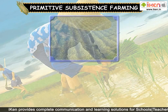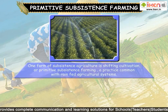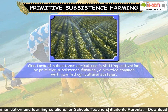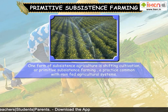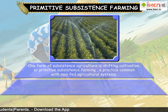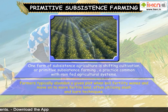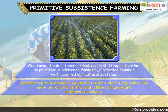Primitive subsistence farming: One form of subsistence agriculture is shifting cultivation, or primitive subsistence farming, a practice common with rain-fed agricultural systems. Farmers typically abandon a given plot when soil fertility wanes and move on to more fertile land, often utilizing slash and burn techniques.